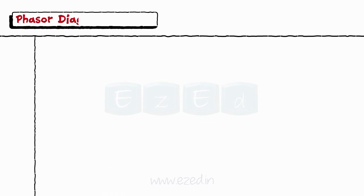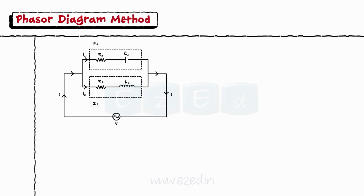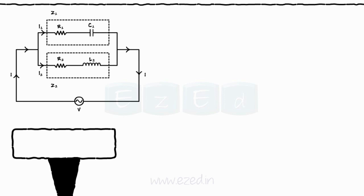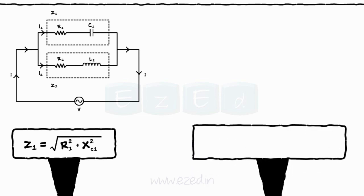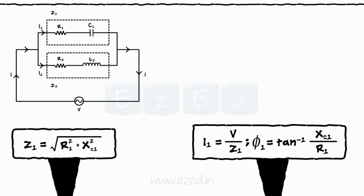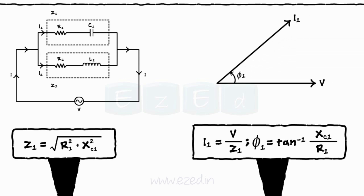Let's start with the phasor diagram method. For the circuit shown, the impedance for the series RC circuit becomes Z1 equals the square root of R1 squared plus XC1 squared. The current in branch 1 equals the total voltage supplied divided by the total impedance of branch 1, and the phase angle is tan inverse of XC1 upon R1. Thus in the phasor diagram, the current leads the voltage by angle phi.